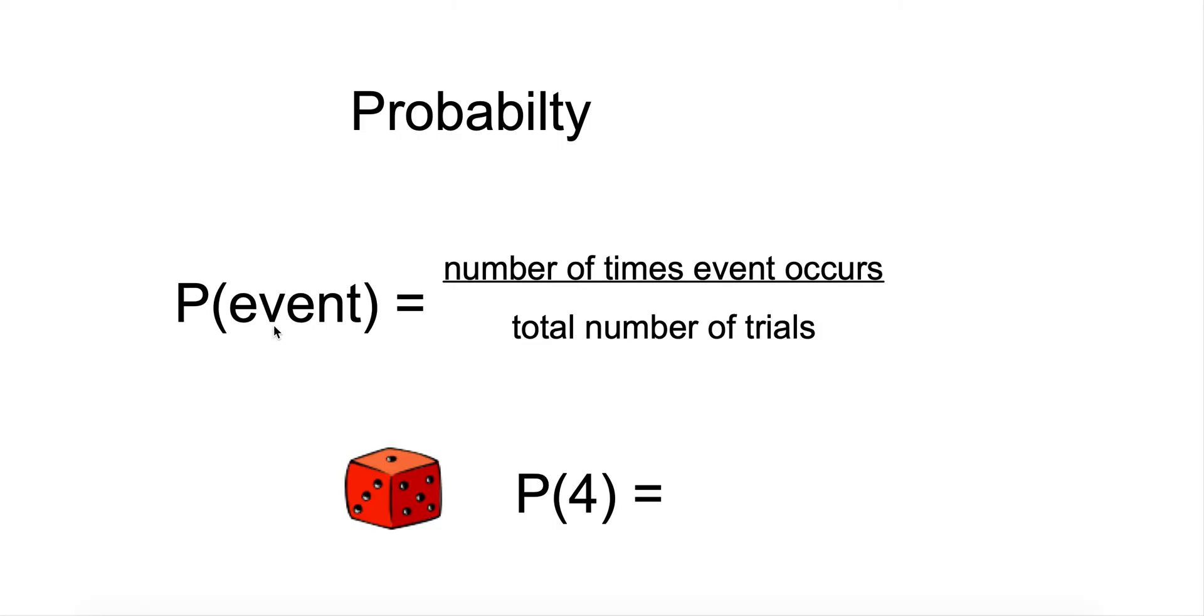To find the probability of an event, we take the number of times the event occurred over the total number of trials. You're going to see a capital P, and in parentheses, that's the desired outcome.